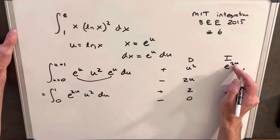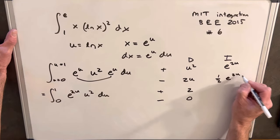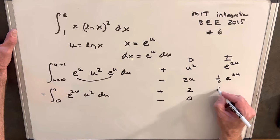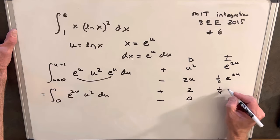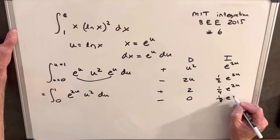Integrating e to the 2u, we'll just pull out the 2 and put it in the denominator. So we'll have a half e to the 2u. And then doing the same thing, we're going to have a quarter, pulling out another half. We'll have a quarter e to the 2u and one eighth e to the 2u.